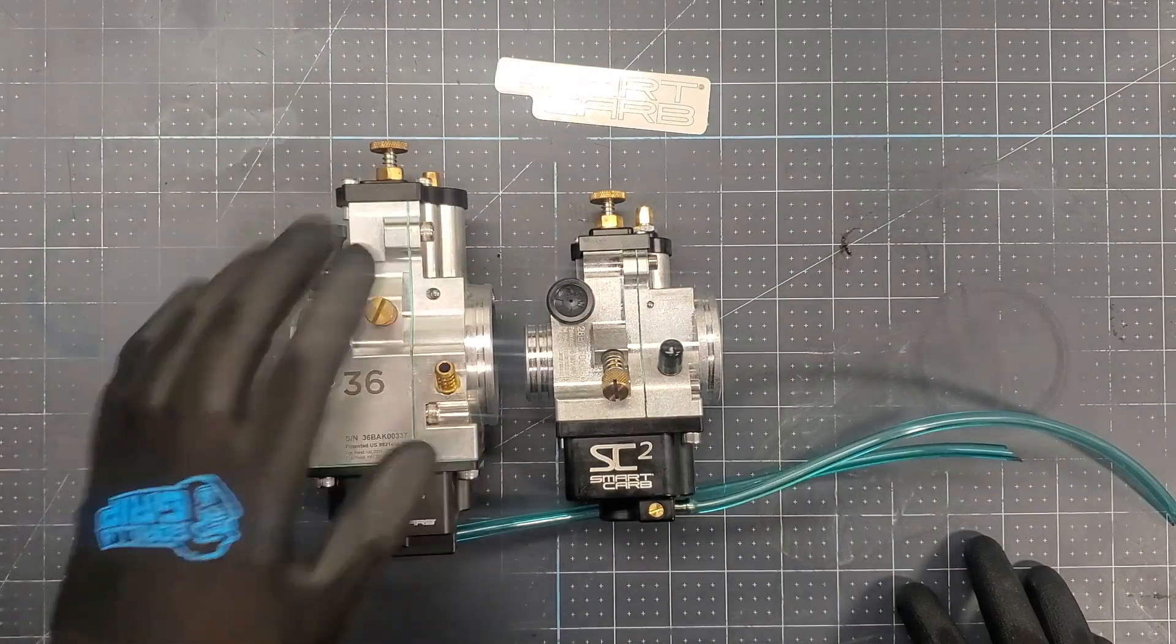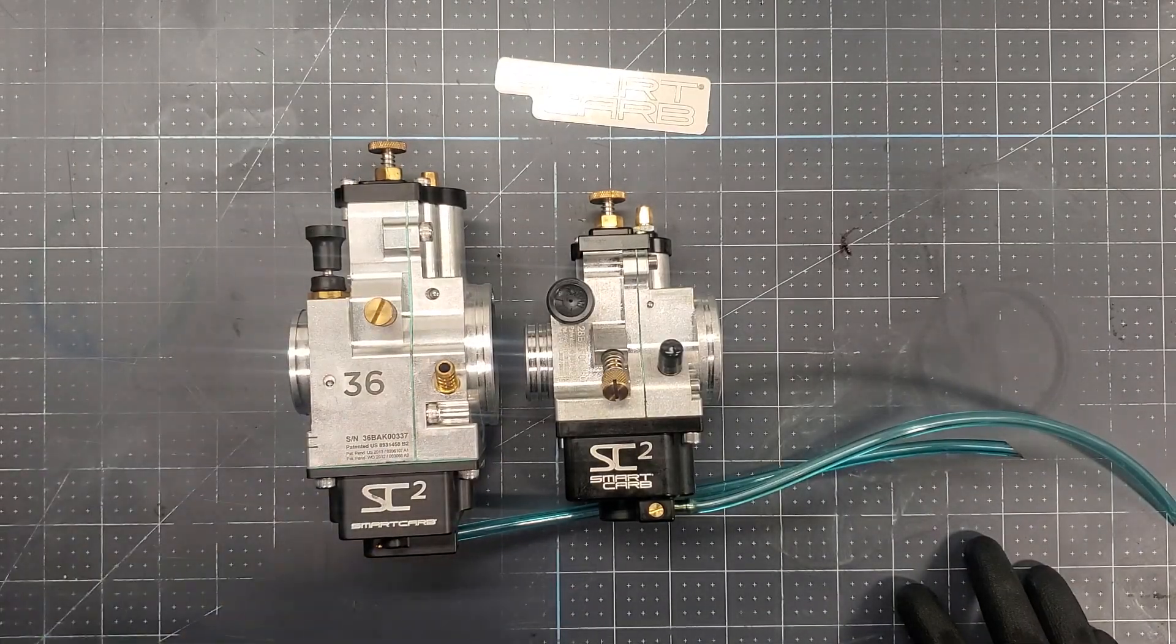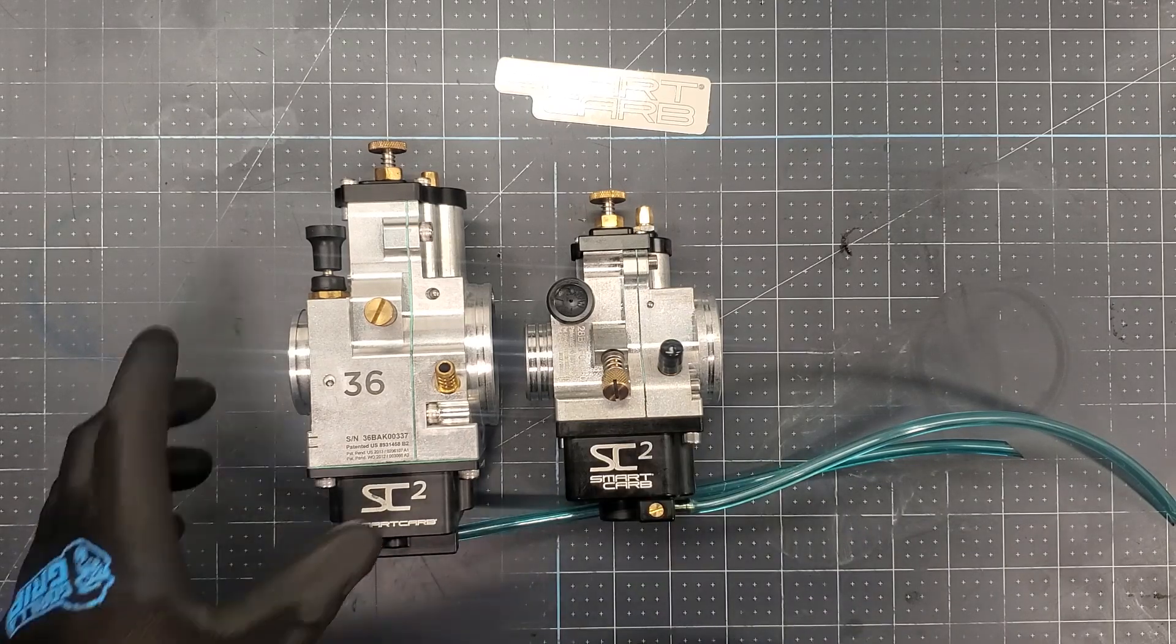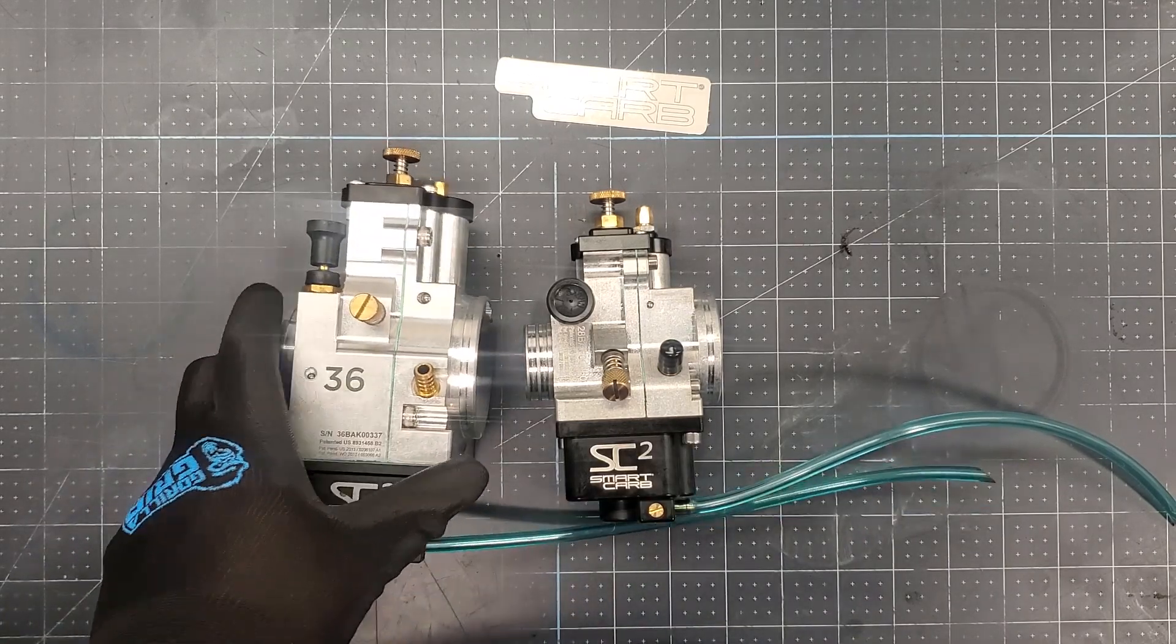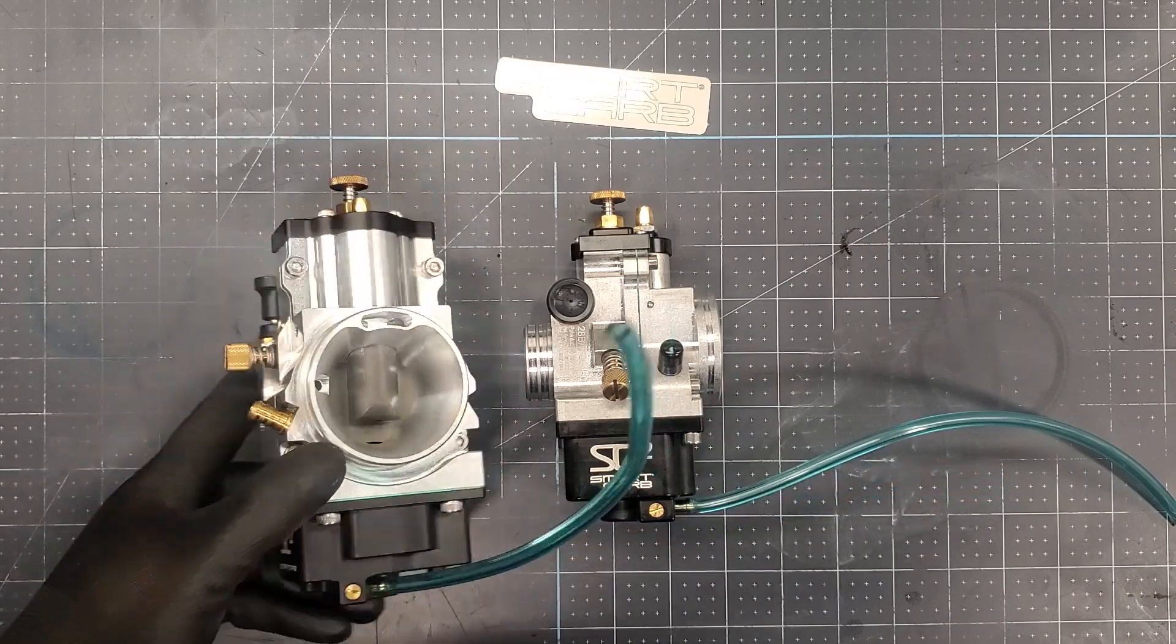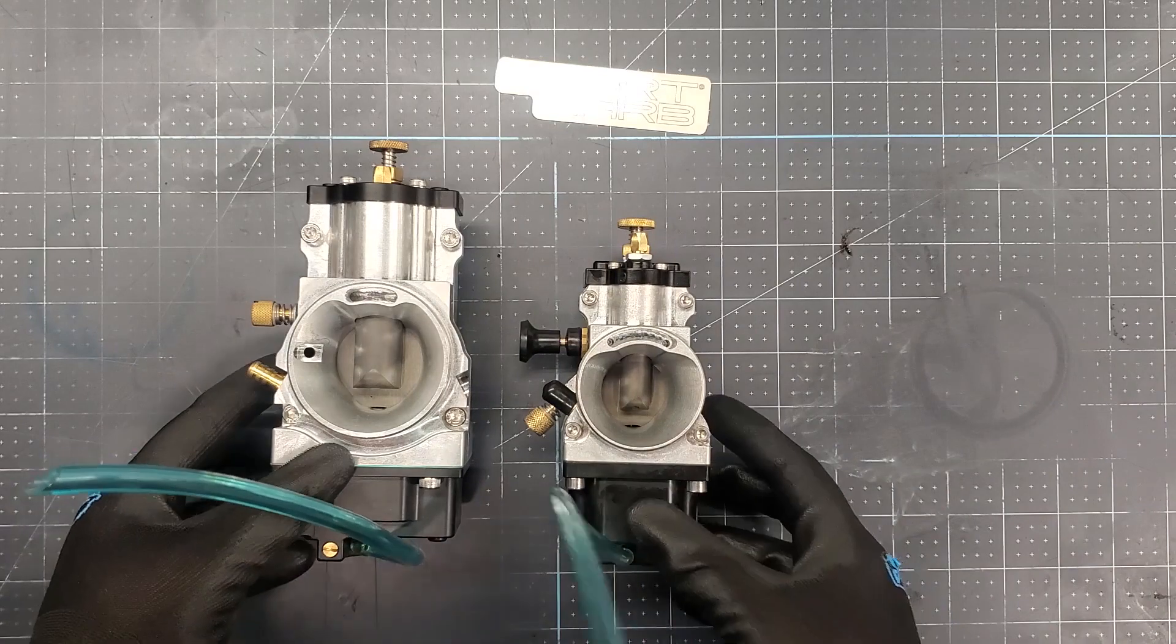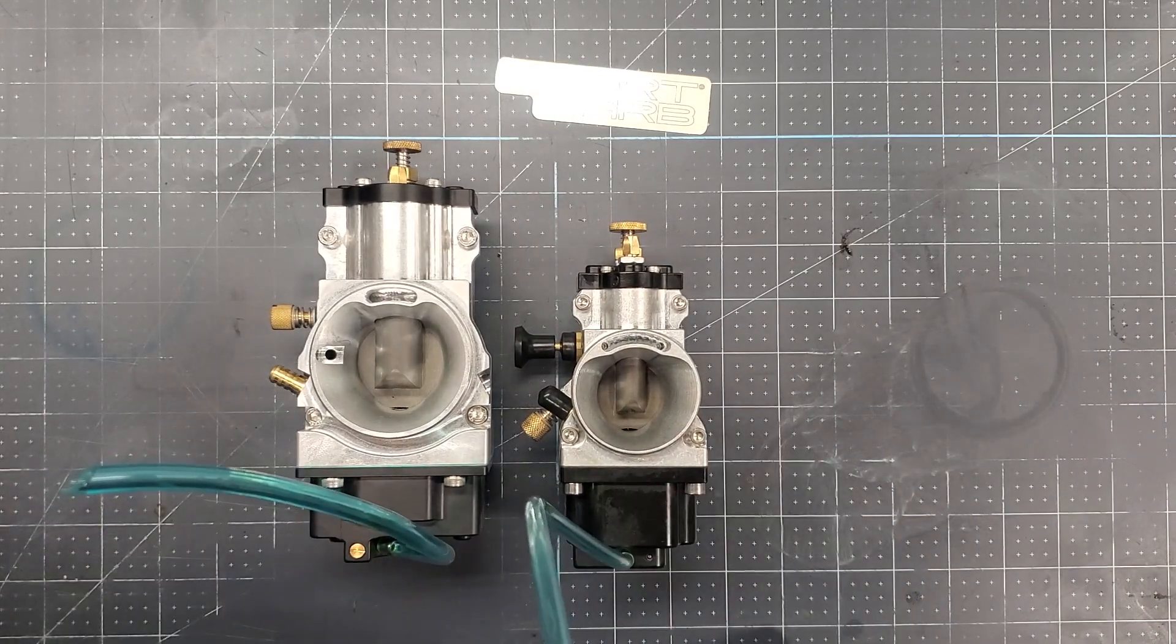I have the pleasure of holding two SmartCarbs from the second generation. On one side we got a 36mm and on the other side we have a 28mm. The entire SmartCarb range is available on my website at deadscootershop.com. I put a link in the description down below.